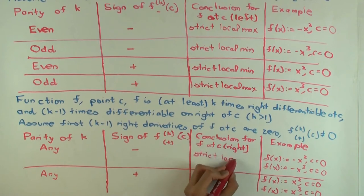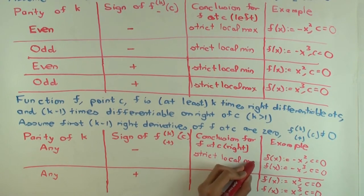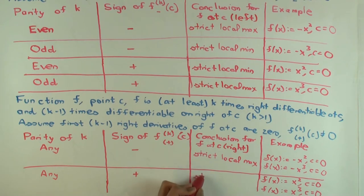And what about the other case? When you have a positive kth derivative? Strict local min. So it's increasing.